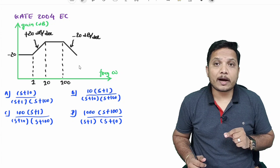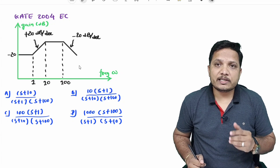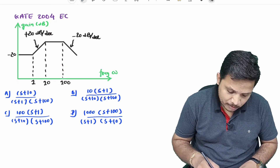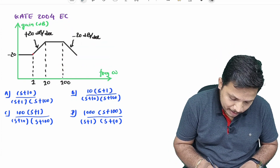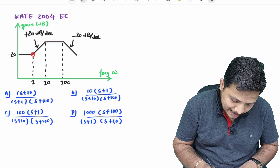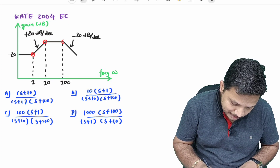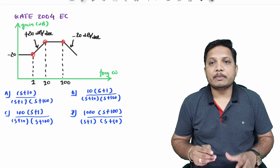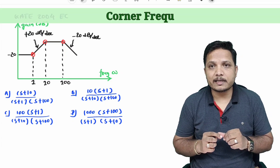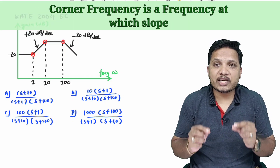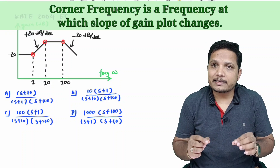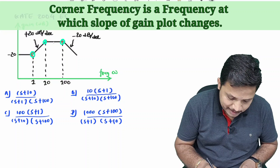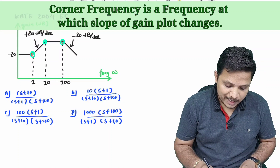The first step is to identify corner frequencies present in the given Bode plot. If you observe, there is one corner frequency, a second corner frequency, and a third corner frequency in this Bode plot. Corner frequency means the frequency at which the slope of the gain is changing — that is a corner frequency.